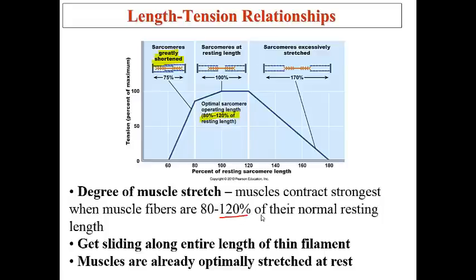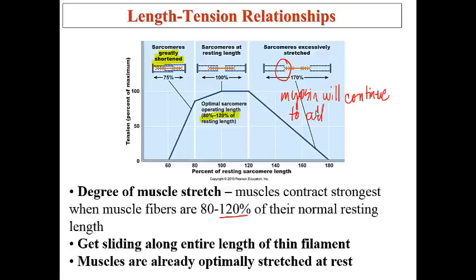On the opposite extreme, there is too much lengthening — over-lengthening at 120 percent or greater. When a muscle is extremely stretched, no more cross bridges can actually form. As shown in the diagram, the myosin has nothing to grab onto. The myosin will continue to attempt to form cross bridges but is unable to. ATP is broken down and the myosin reaches up trying to grab onto actin, but there is nothing left. So the optimal length-tension relationship is 80 to 120 percent.